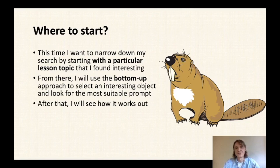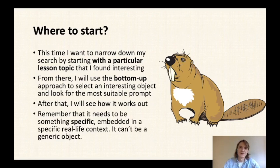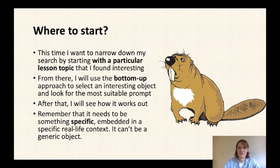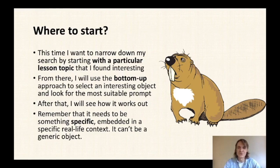Once an interesting object is selected, I'm going to try and find the knowledge question that can be used for it. Remember that whatever objects you select, the IB is adamant about objects being something specific, embedded in a specific real-life context rather than a generic object. As they write in the guide, a generic teddy bear is not okay, but a specific teddy bear you had as a toy in your childhood and grew emotionally attached to is better because it has a personal context around it.